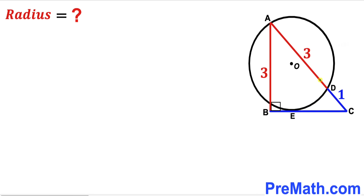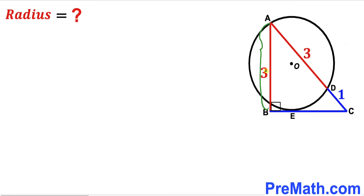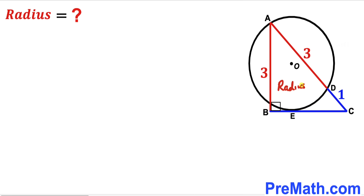Welcome to Pre-Math. In this video, we have a right triangle ABC and a circle with center O arranged such that side BC of the right triangle is tangent to the circle at point E. The side length AB is 3 units, chord length AD is 3 units, and segment CD is 1 unit. Our task is to calculate the radius of this circle.